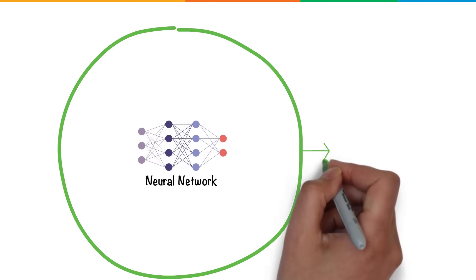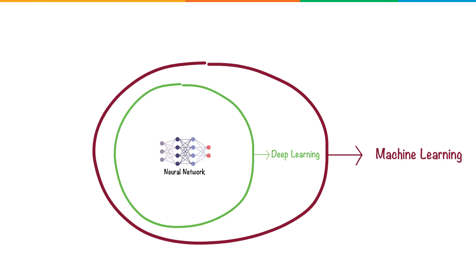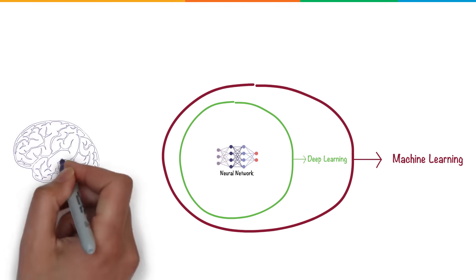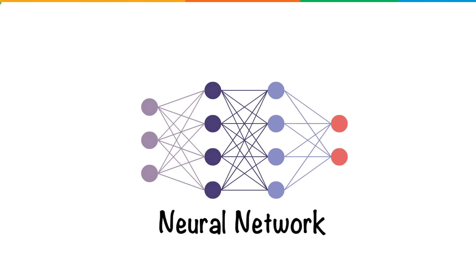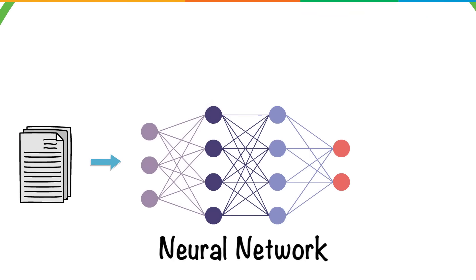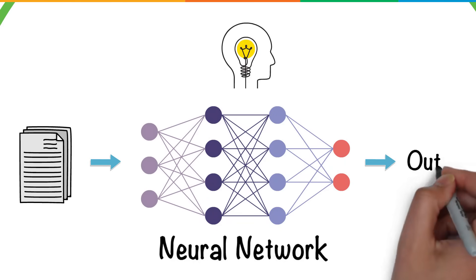Neural networks form the base of deep learning, a subfield of machine learning where the algorithms are inspired by the structure of the human brain. Neural networks take in data, train themselves to recognize the patterns in this data, and then predict the outputs for a new set of similar data. Let's understand how this is done.